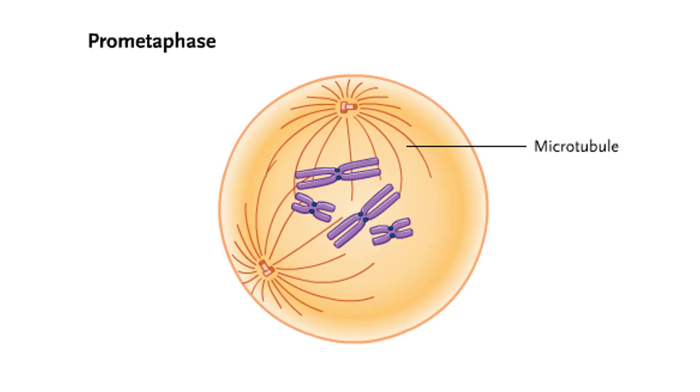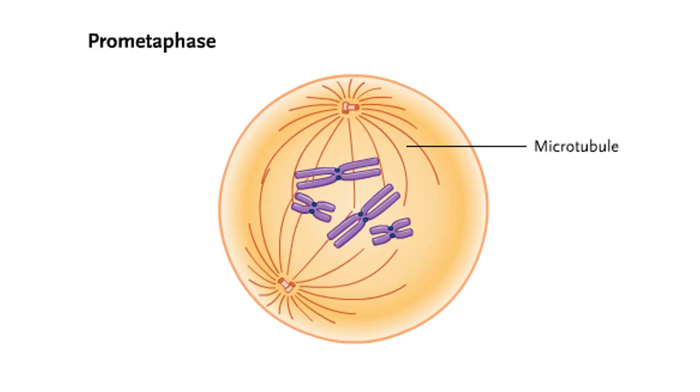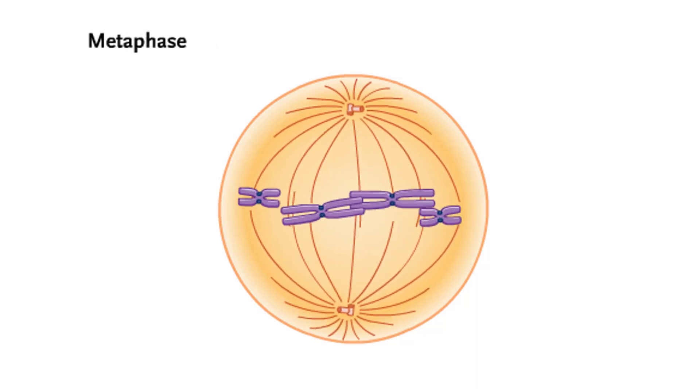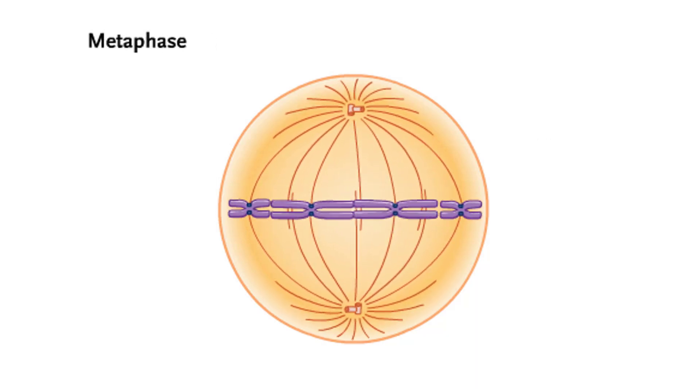Many spindle microtubules become attached to the sister chromatids of each chromosome. The two-way pulling of microtubules from both poles drags the chromosomes to the spindle equator.